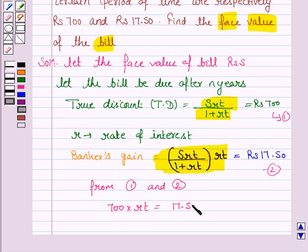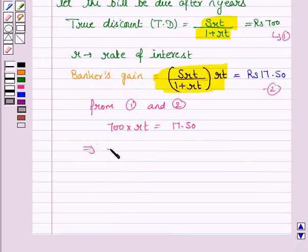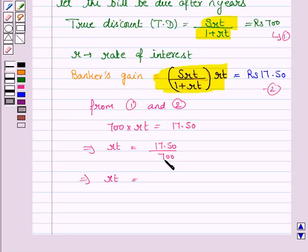This implies R into T is equal to 17.50 divided by 700, which is equal to 0.025.